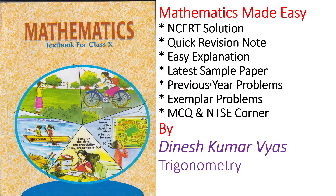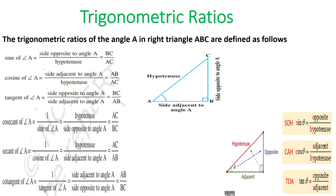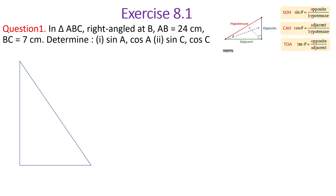Hello viewers. After introduction, I shall discuss how trigonometric ratios can be used. Previously we studied SOH-CAH-TOA — SOH stands for Sine equals Opposite over Hypotenuse, CAH for Cosine equals Adjacent over Hypotenuse, TOA for Tangent equals Opposite over Adjacent. Now we will solve the first problem of Exercise 8.1.